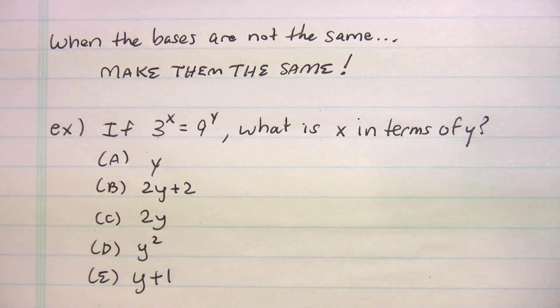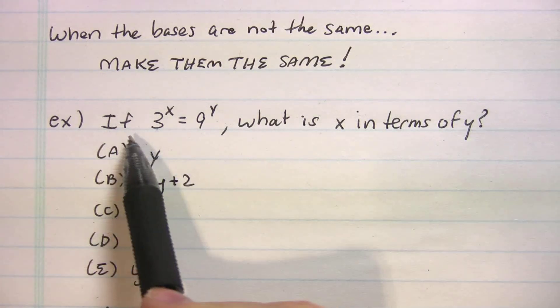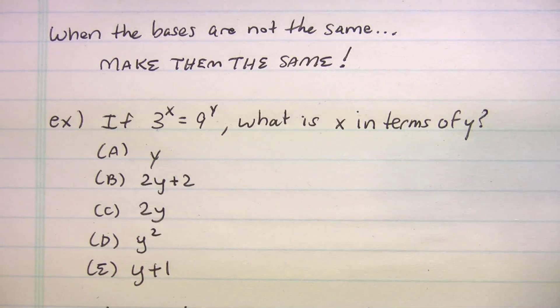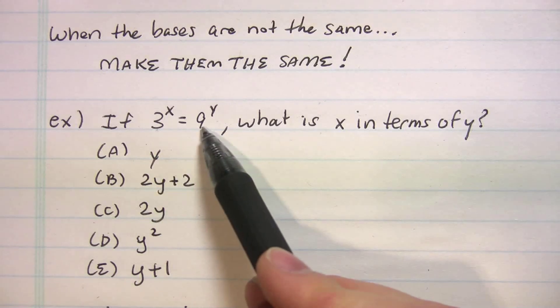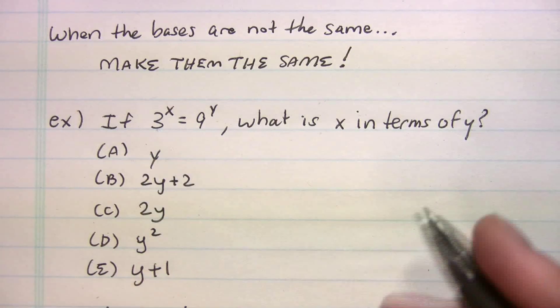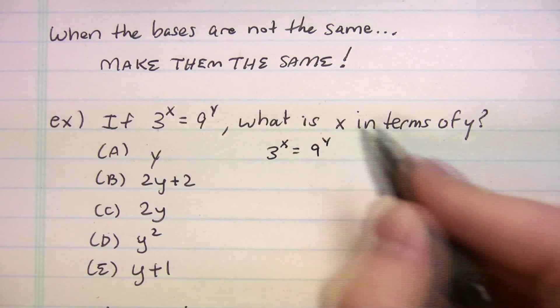Well, it kind of comes with experience and knowing numbers, but you gotta be able to put numbers in different forms. And let's take an example, look at an example here. It says, if three to the x equals nine to the y, what is x in terms of y? So, I have a base of three and a base of nine. So, what you gotta do is, let's try and make this base of nine into a base of three. So, let me rewrite this here. We got three to the x equals nine to the y.